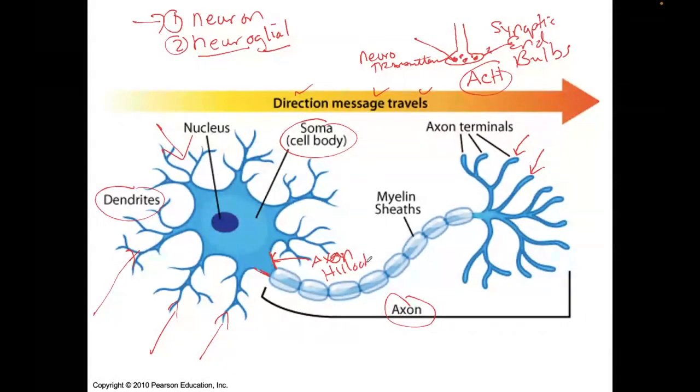This part right here, this is the axon, and this is the axon terminal, and the very tip of the axon terminal, that's what we call the synaptic end bulb, which stores neurotransmitters.